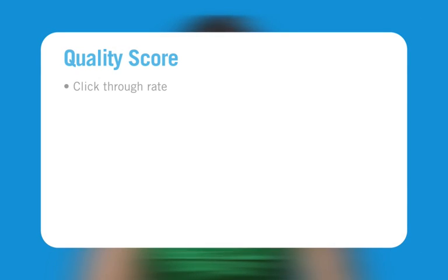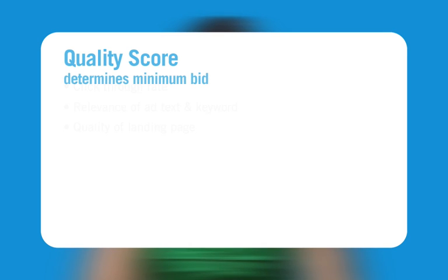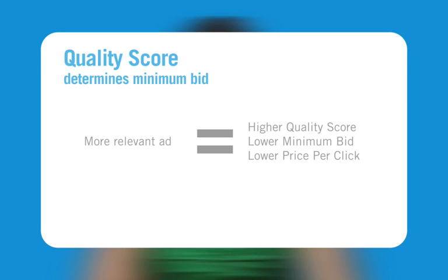Another important term in the AdWords program is quality score. Quality score is a measure of the quality of your keyword. It is determined by the keyword's click-through rate, the relevance of the ad text and keyword, and the quality of the ad's landing page. The quality score of your keyword determines your minimum bid on that keyword. The minimum bid is usually the least amount you can pay per click in order for your keyword to trigger your ad. Google rewards advertisers with high relevance, so the more relevant your keyword is, the higher your quality score will be, and the lower your minimum bid and price you'll pay per click.